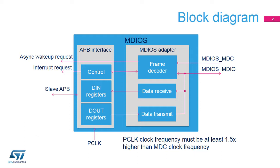Note that the PCLK clock frequency shall be at least 1.5 times higher than the MDC clock frequency. When the MDC bitrate is 20 MHz, the PCLK shall run at least 30 MHz.